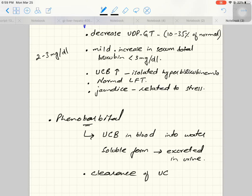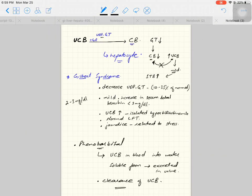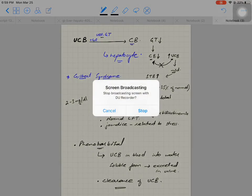So we discussed that Gilbert syndrome is a genetic disorder related to the glucuronyl transferase enzyme, which is very essential for the conjugation of bilirubin. Thank you.